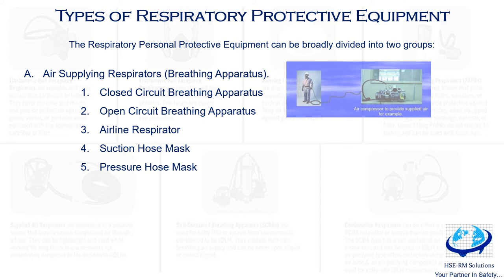On exhalation, the demand valve closes and exhaled air escapes into the surrounding atmosphere through the exhalation valve. Helmets and hoods are not attached to the demand type respirator. The airline respirator consists of a face piece — half or full mask — and loose-fitting helmets or hoods may be attached. Air is supplied through a small-diameter hose and may be continuous supply type or demand type through a compressed air pipeline.